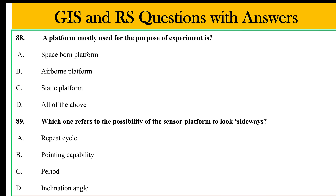The platform is mostly used for the purpose of experiments. The platform is used as the sensor. This is a static platform to look sideways, which refers to the policy of the sensor platform to look sideways. Options: A. repeat cycle, B. pointing capability, C. period, D. inclination. The answer is B. pointing capability.